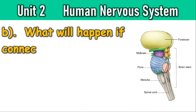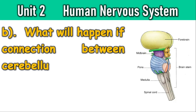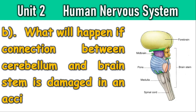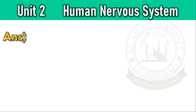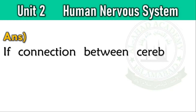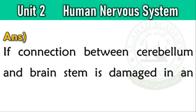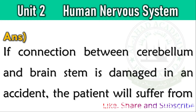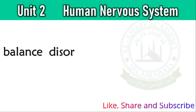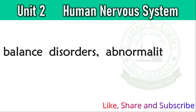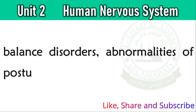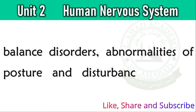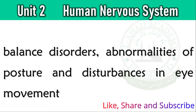What will happen if the connection between the cerebrum and brainstem is damaged in an accident? If the connection between the cerebrum and brainstem is damaged in an accident, the patient will suffer from balance disorders, abnormalities of posture, and disturbances in eye movements.